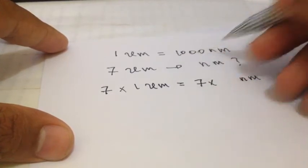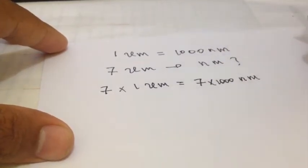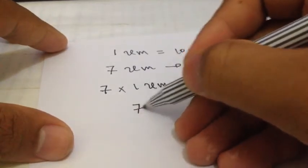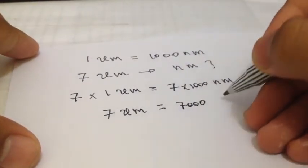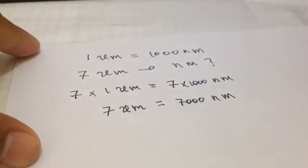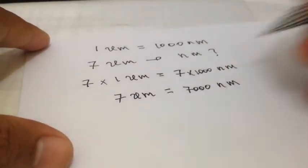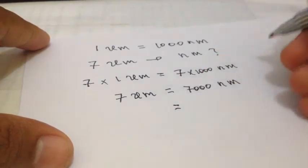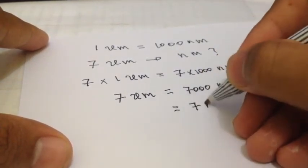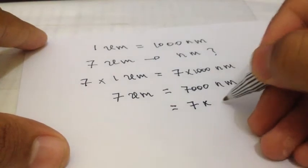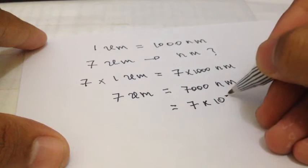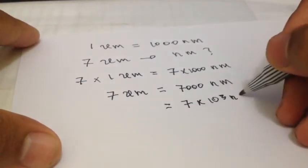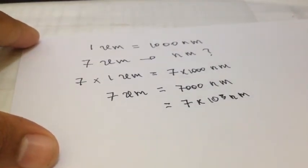Okay, it's one thousand. All right, so seven micrometers is equal to seven thousand nanometers. Well that's the answer. Or if you want to make it look cooler than this, you can use seven multiplied by 10 to the power of three. Well that's it.